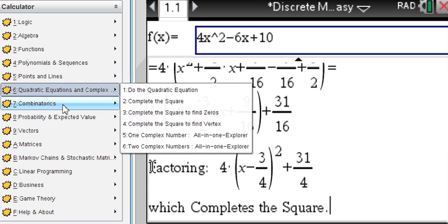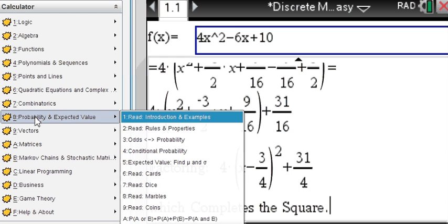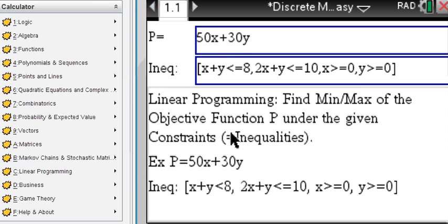Complex numbers, as I mentioned before. Combinatorics, probabilities. Let's look into some linear programming. Say you want to find a maximum.